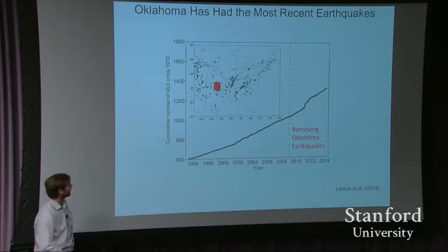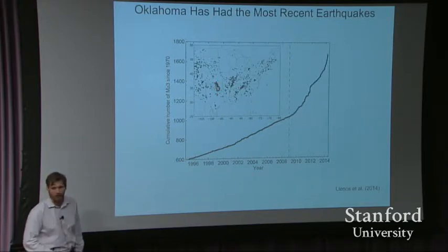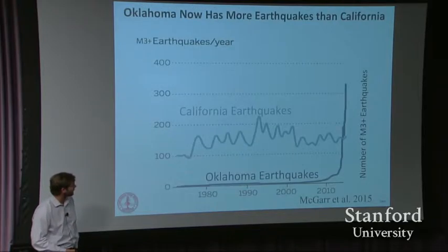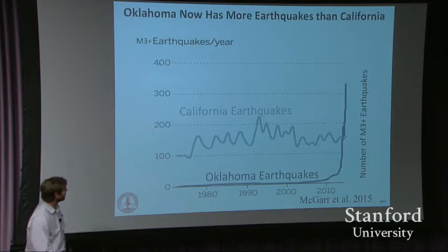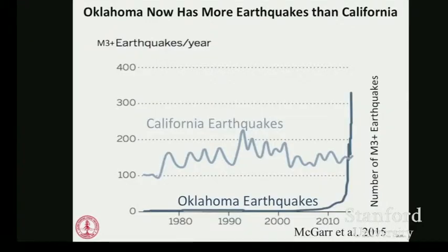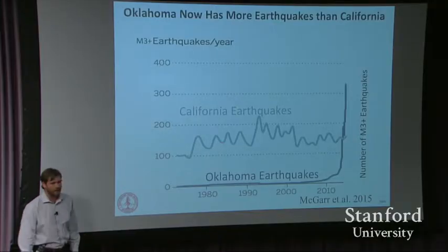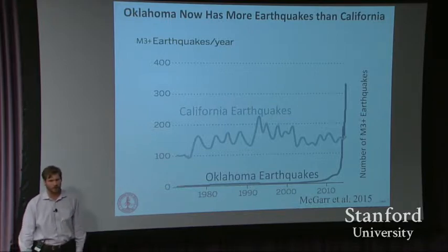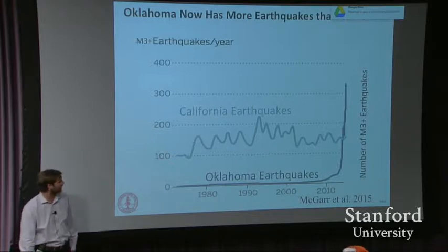The lion's share of the extra earthquakes are happening in Oklahoma. I've juxtaposed the number of earthquakes in California with the number of earthquakes in Oklahoma — this is work by Art Magar at the USGS. There are natural rates of earthquakes in both California and Oklahoma. The natural rate in Oklahoma is a lot less because it's in the middle of a tectonic plate, not at the edge of one. But as of very recently, we're seeing more earthquakes in Oklahoma than in California.